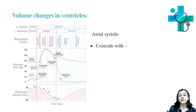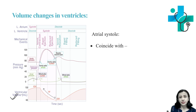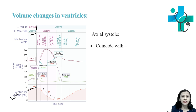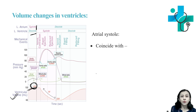Last is volume changes in the ventricle. This curve shows ventricular volume changes. During atrial systole, the atria are contracting but the ventricles are receiving blood, so there is filling of the ventricle and intraventricular volume increases. At the end of atrial systole — equal to the end of ventricular diastole — the volume of blood in the ventricle equals end diastolic volume, which is about 130 ml.